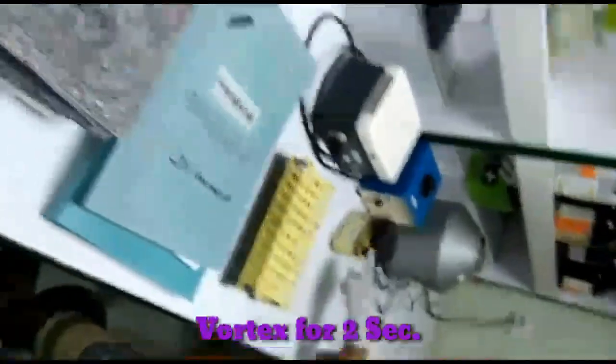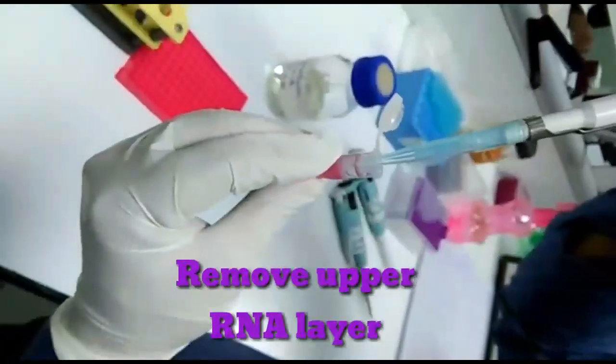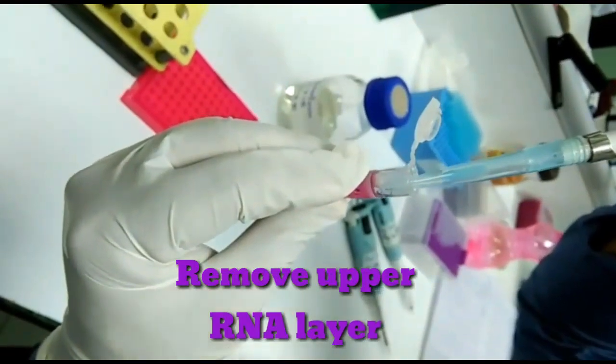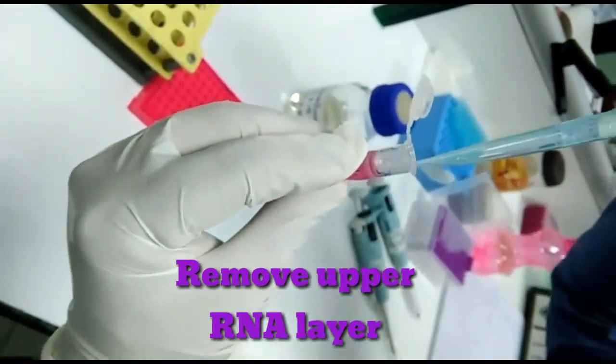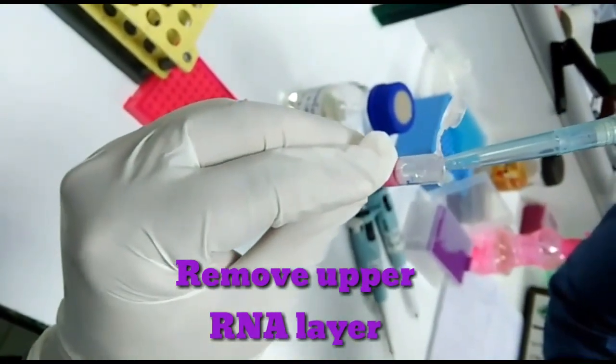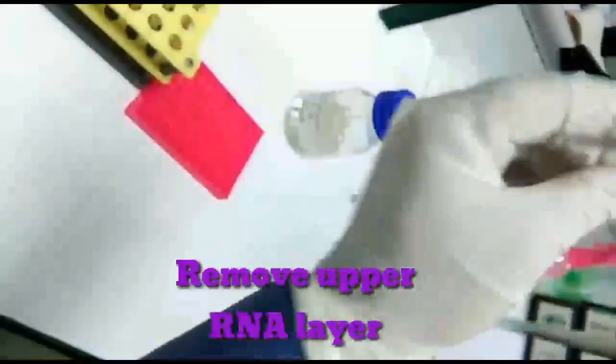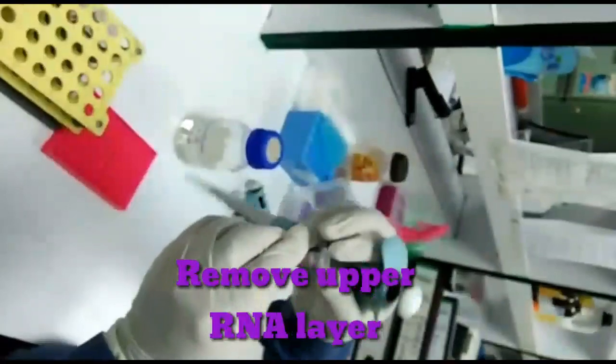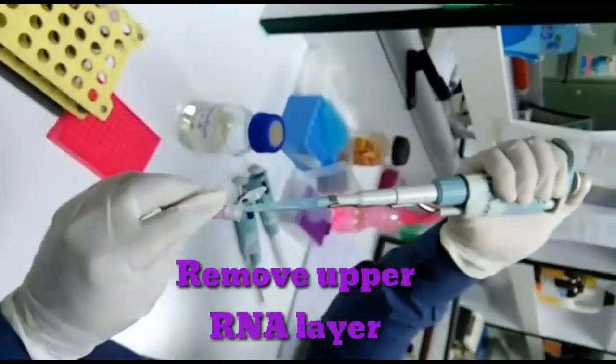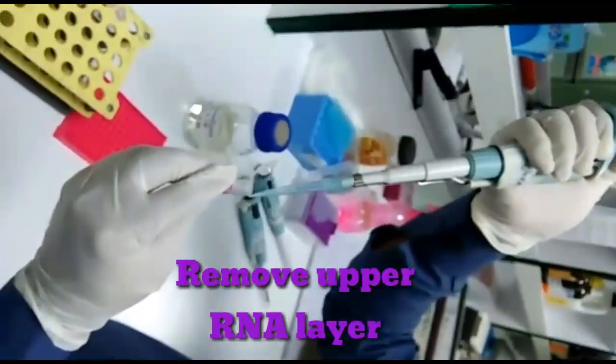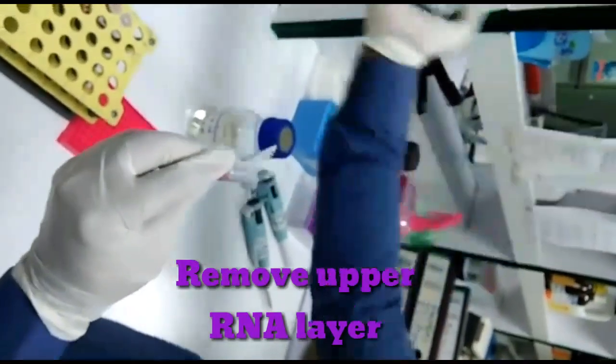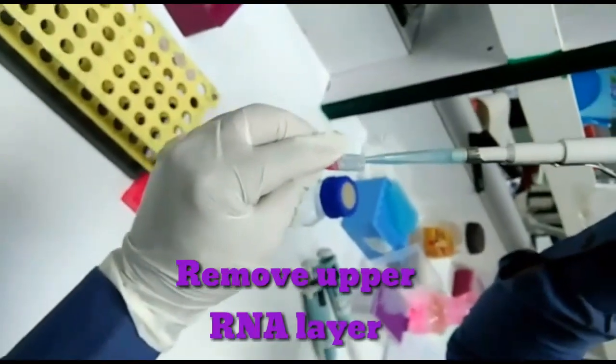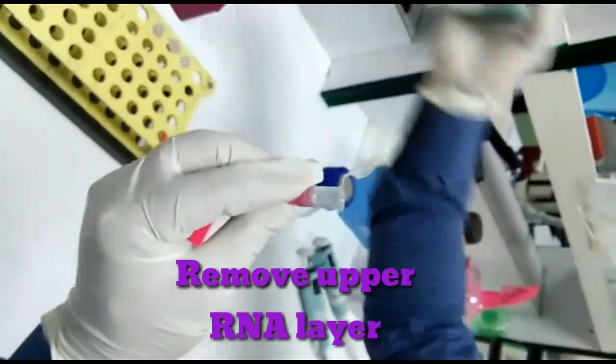After incubation, the chloroform will break the sample in three layers. Remove the upper RNA layer. Here we are removing the upper layer, that is RNA. The middle layer, that is DNA, and the lower layer, that is proteins. Remove RNA carefully from each sample.